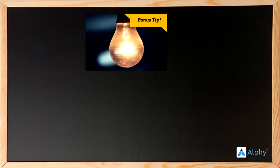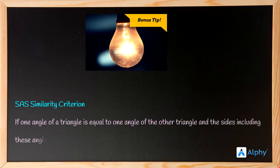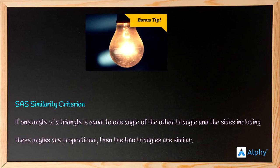In this lesson we have learned the SAS similarity criteria, which states: if one angle of a triangle is equal to one angle of the other triangle and the sides including these angles are proportional, then the two triangles are similar.